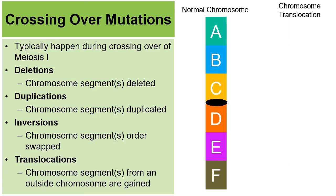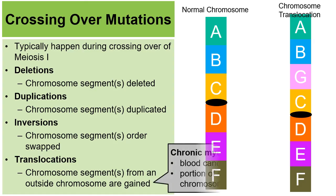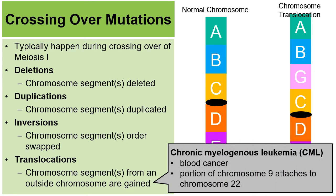Finally, there are translocation disorders, where chromosome segments from an outside chromosome are gained. During the swapping of chromosome parts, this chromosome obtained another segment — labeled G — from another chromosome. An example is a blood cancer where a portion of chromosome number 9 has actually attached to chromosome number 22. These are examples of mutations that happen during the act of crossing over.